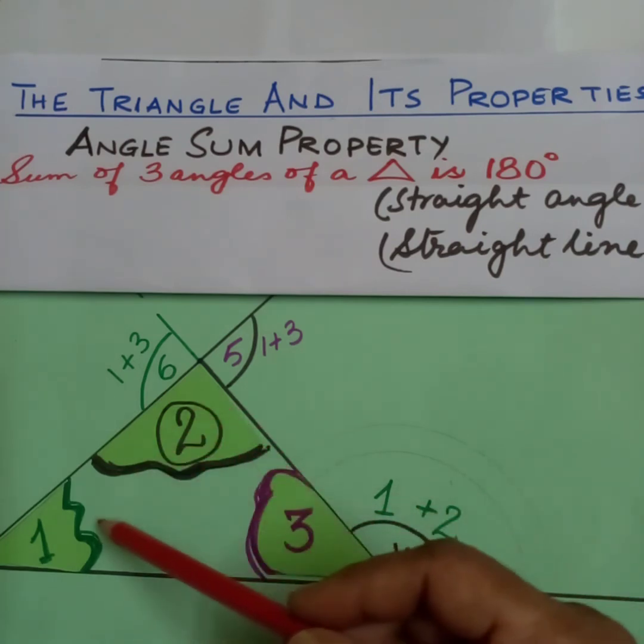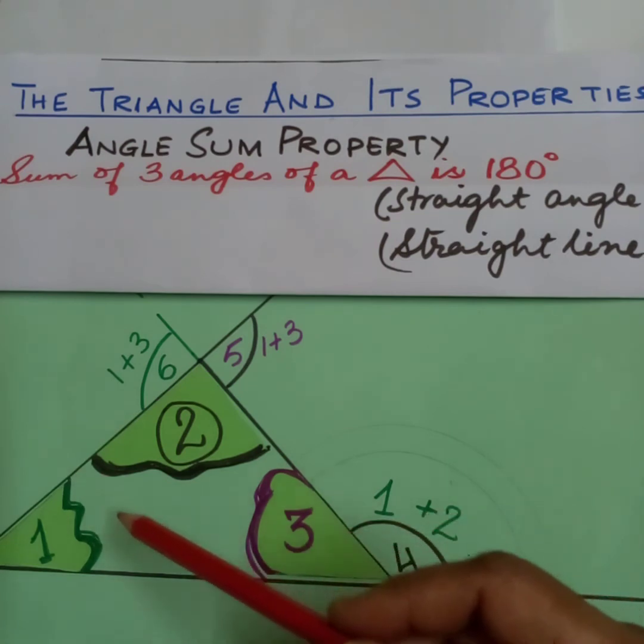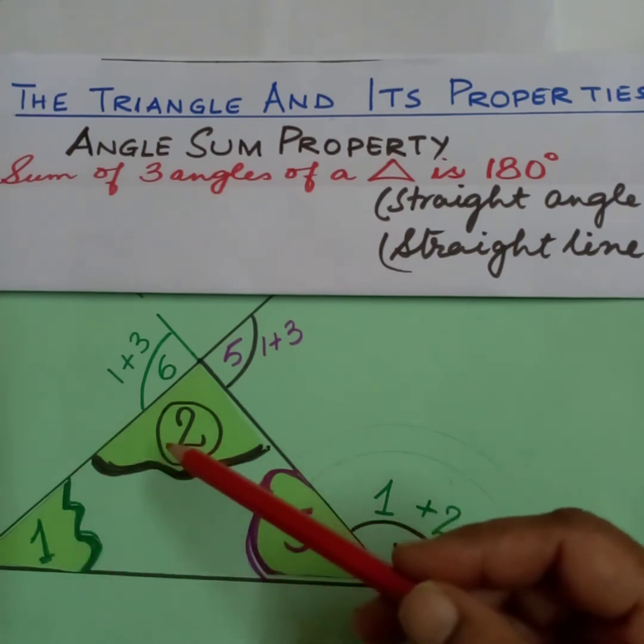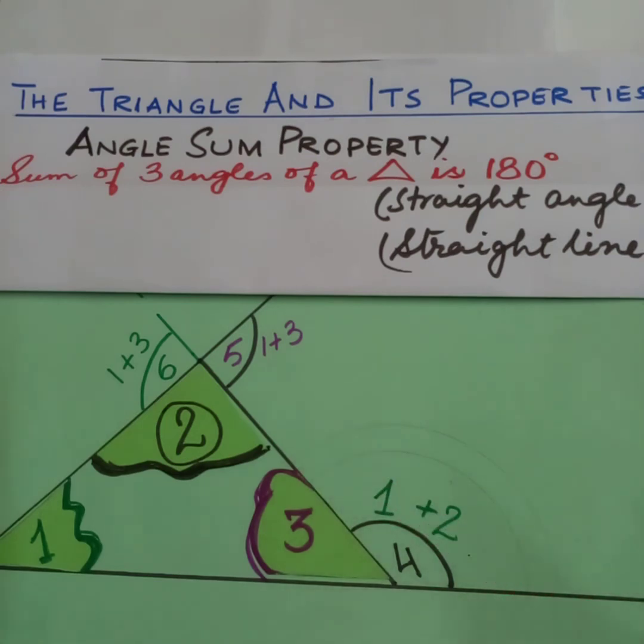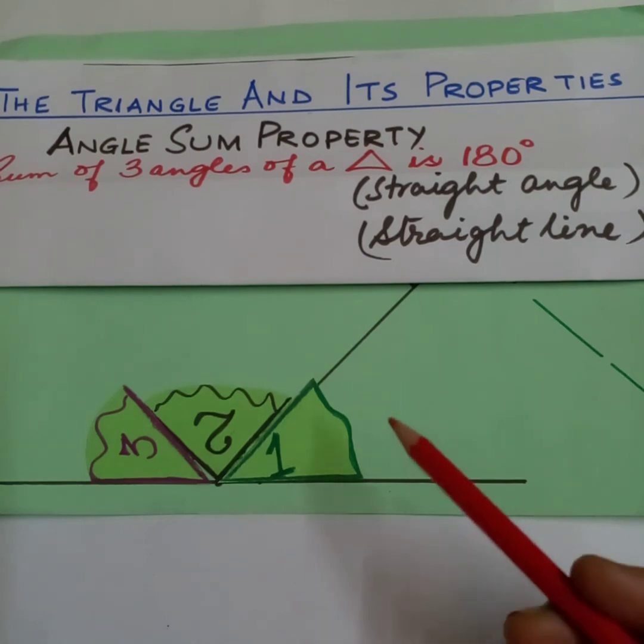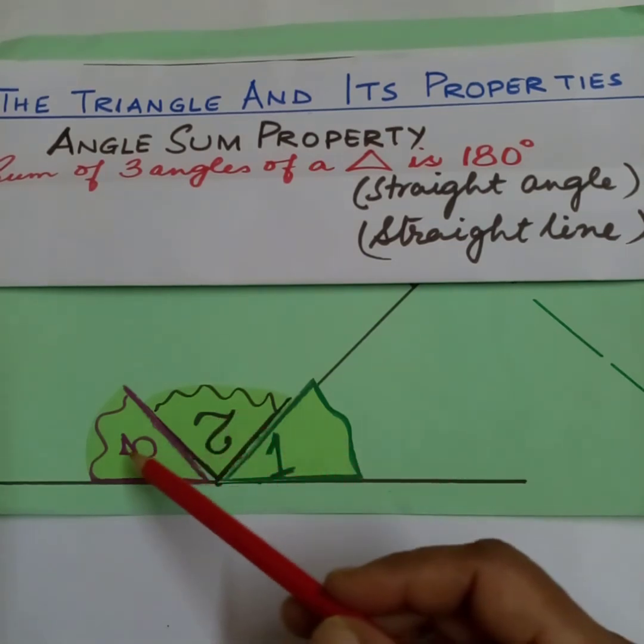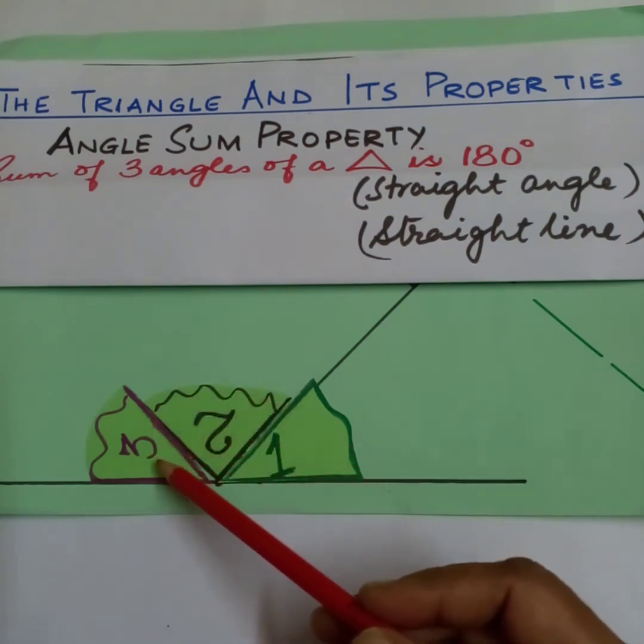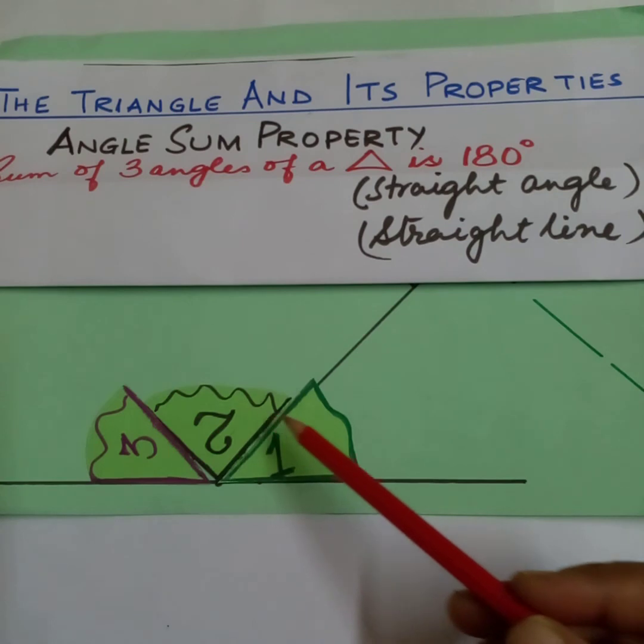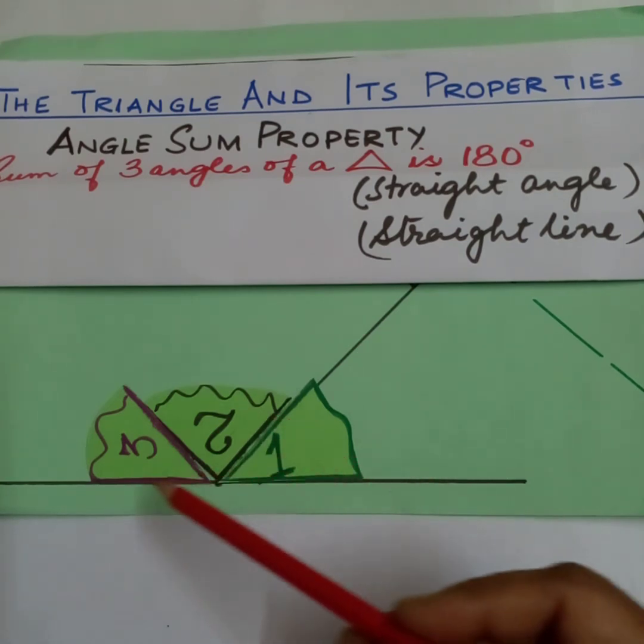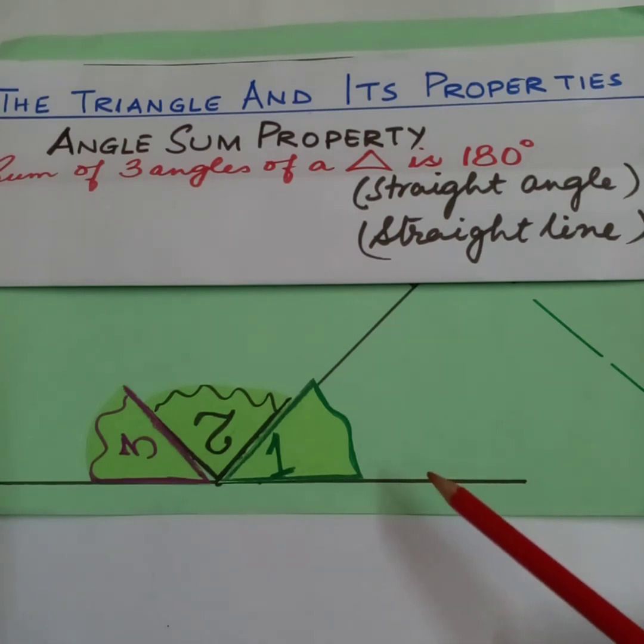This is the proof. We have to cut angles 1, 2, and 3 and place them together. See, we have cut all the three angles and now it shows that angle 3 plus angle 2 plus angle 1 is equal to 180 degrees. It is forming a straight line. So this shows that the three angles of a triangle equal 180 degrees.